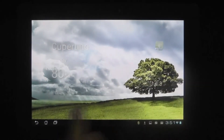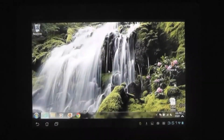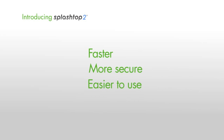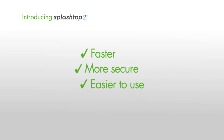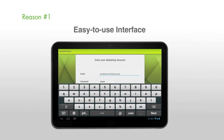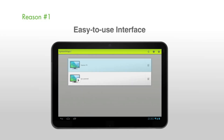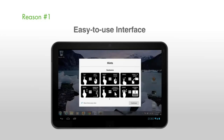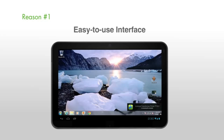Join the millions of people using the award-winning Splashtop app to remotely access their PCs and Macs with full audio and video. Splashtop 2 is the next-generation remote desktop app — even faster, more secure, and easier to use. Reason number one: easy-to-use interface. Splashtop 2 has been redesigned, making it even simpler to use. No more configuring security codes, Google accounts, port numbers, or IP addresses. Just log in and connect.